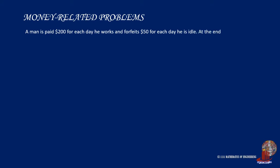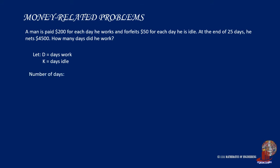The second money-related problem states: a man is paid $200 for each day he works and forfeits $50 for each day he is idle. At the end of 25 days, he nets $4,500. How many days did he work? Let's denote D as the days a man worked and K as the days he was idle. The problem states that the total number of days is 25, so D plus K is equal to 25.